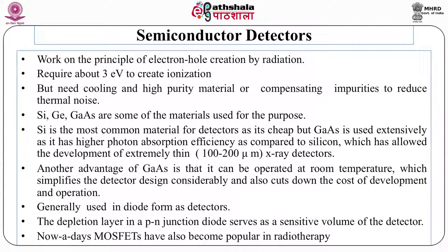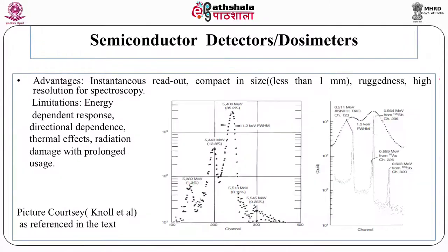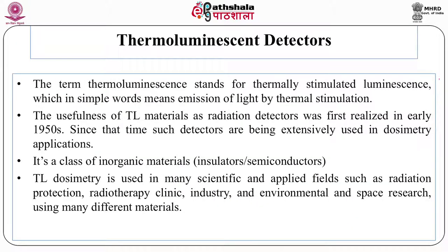Advantages of semiconductor diode dosimeters include instantaneous readout, compact size, ruggedness, and high resolution for spectroscopy — because it requires only 3 eV to produce one ion pair. Limitations include energy-dependent response, directional dependence (response varies depending on the direction from which radiation falls on the detector), temperature effects, and the fact that diodes change their response over time due to radiation damage accumulated over long periods.